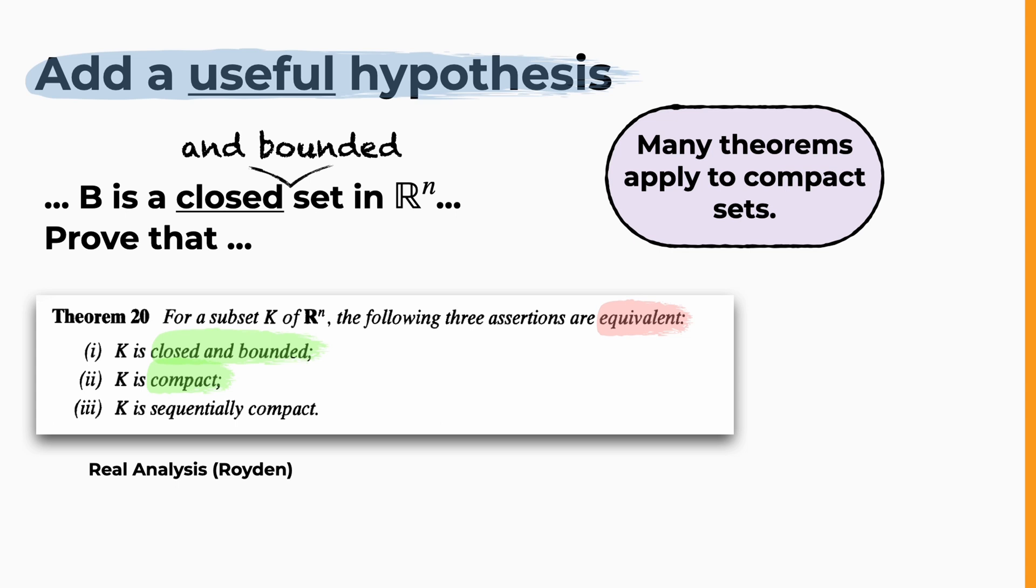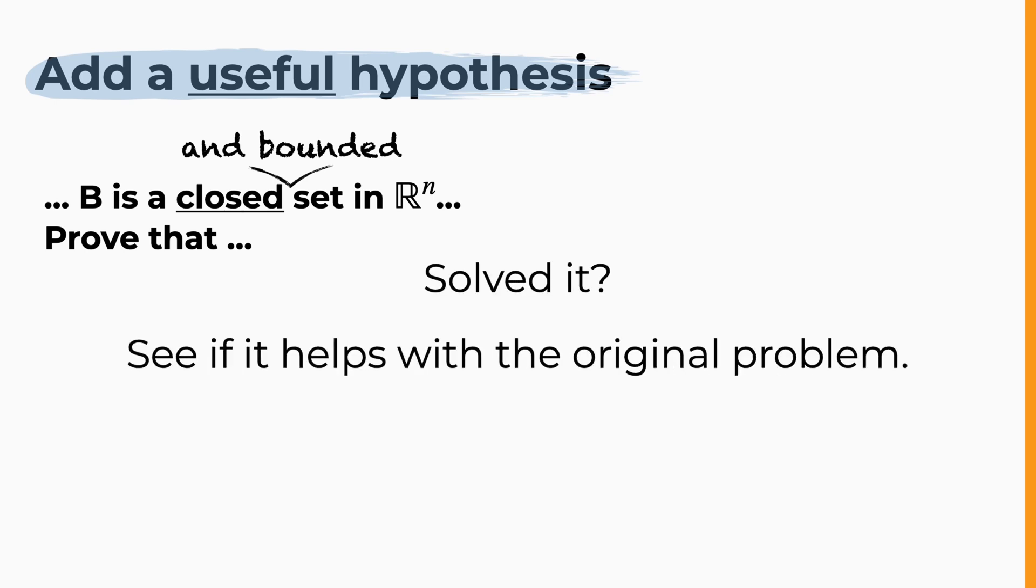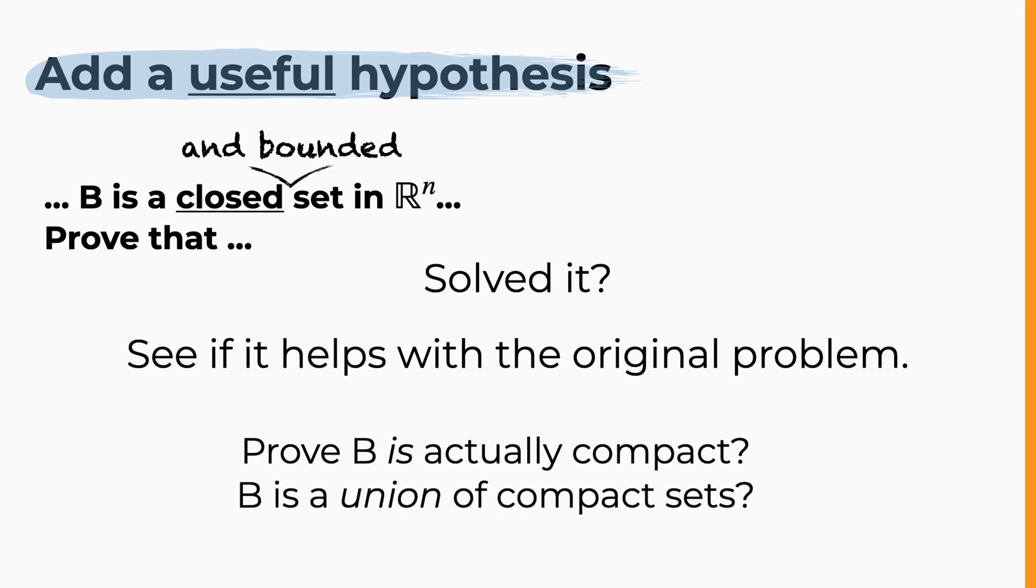This opens the door to many previous results, which is a good thing as we know from an earlier video. So, let's say that you have successfully solved this modified problem. Now it's time to think how it might connect to the original one. Maybe you can prove that your closed set is actually compact, or maybe you can claim that it is a union of compact sets and you can use this somehow.